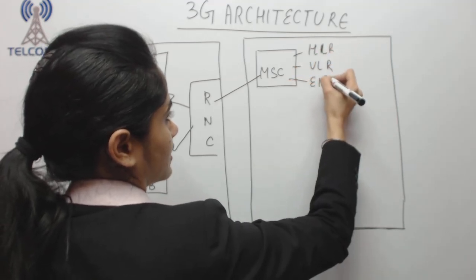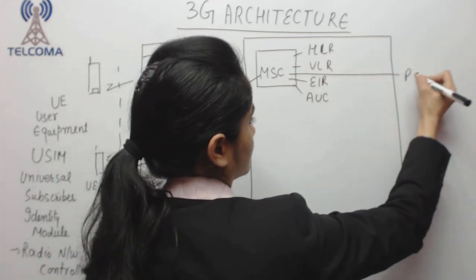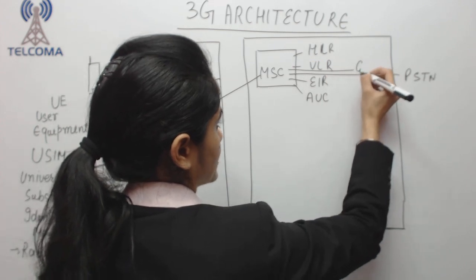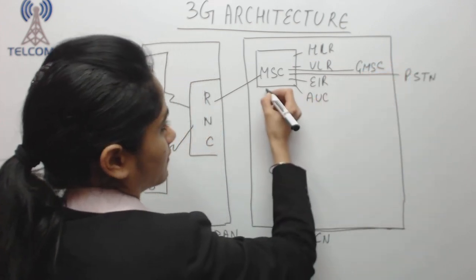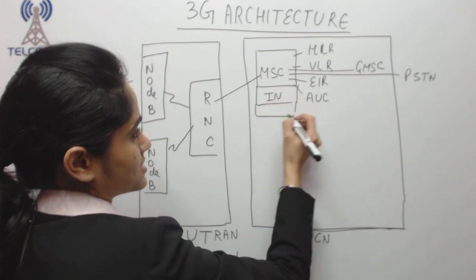VLR, EIR, AUC. We have connectivity with PSTN and GMSC, we have Intelligent Network for billing, and we have SMSC, Short Message Service Center for SMSC.